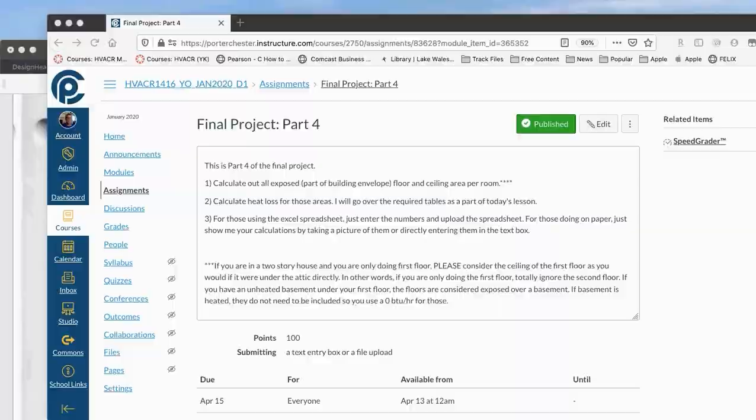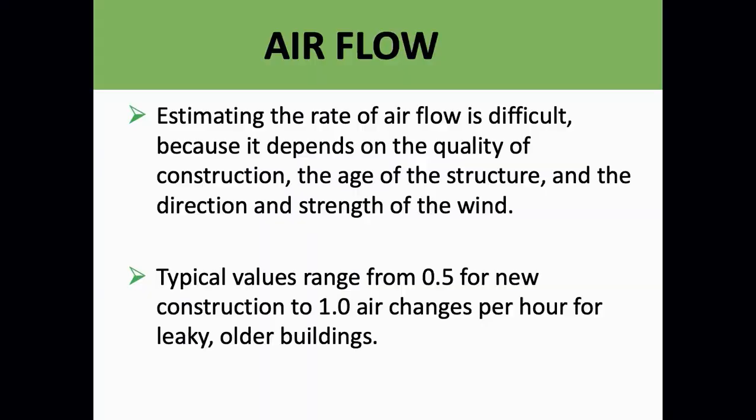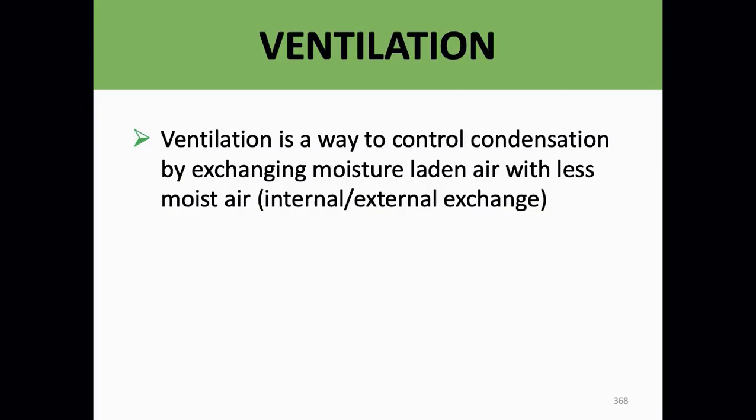Typical values of airflow range from 0.5 for new construction to 1.0 air changes per hour for older leaky buildings. This becomes very important with heating and cooling loads because of the humidity and the cold air that comes in. Ventilation is going to be part of your heat load. Ventilation is a way to control condensation by exchanging moisture-laden air with less moist air.